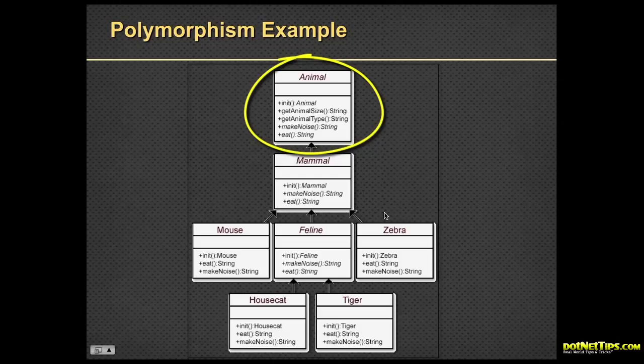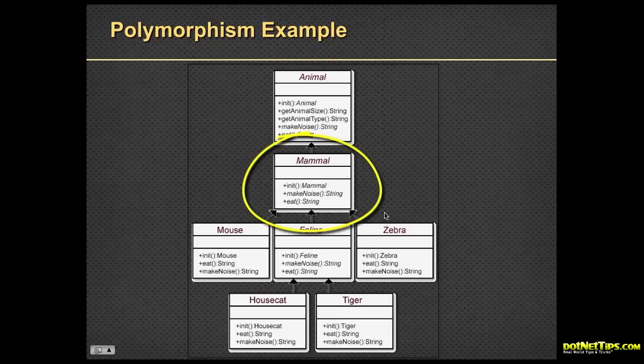The first object I'm creating from animal is mammal. All classes have a constructor, an initializer. Here I'm overriding make noise and implementing a make noise for mammal, whatever a noise for a mammal is. And I'm also overriding eat and then returning something for mammal, the default implementation for mammal for eat.